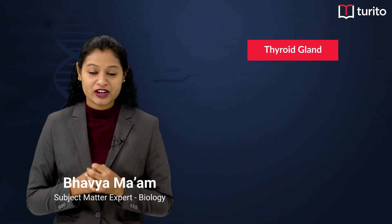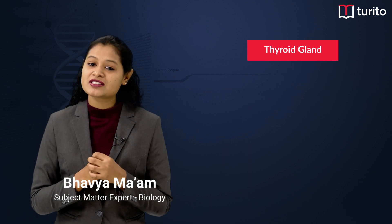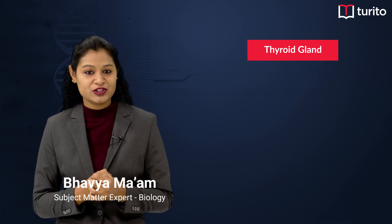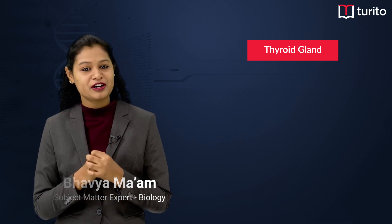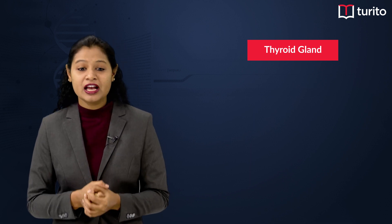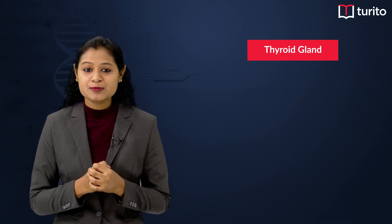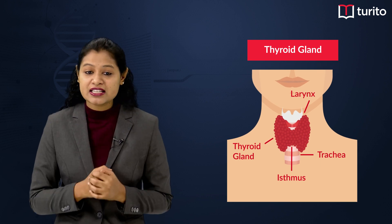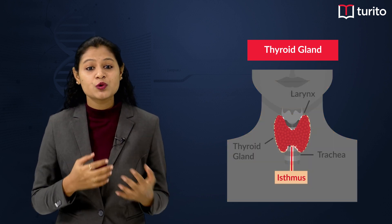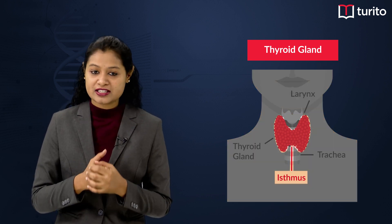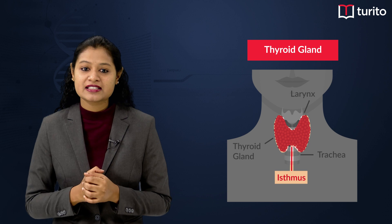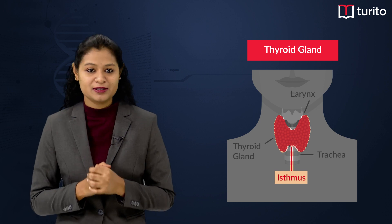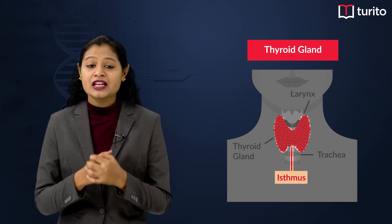Today let's talk about the thyroid gland, which is the largest endocrine gland of our body. It is present in the neck region, and we see that there are two oval elongated lobes connected by an isthmus.